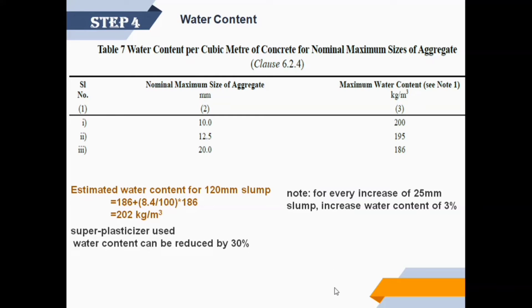Therefore, estimated water content for 120 millimeters slump equals 202 kilogram per cubic meter. Superplasticizers reduce water content up to 30%. In this mix design, we are adding superplasticizer, hence water content can be reduced by 30%. Therefore, reduced water content is 141 kilogram per cubic meter.